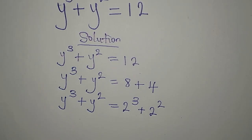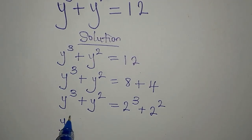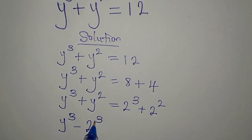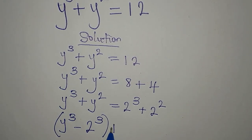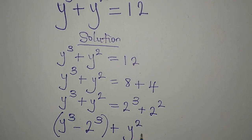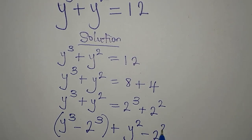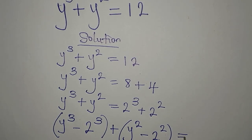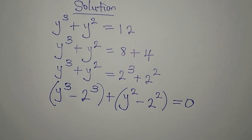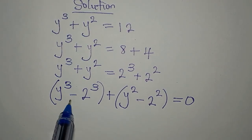Now the left hand side and right hand side are in the same form. We regroup: y³ minus 2³ together, then plus y² minus 2², and equate to zero.